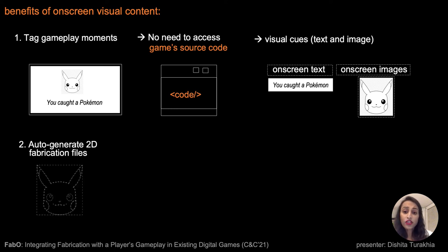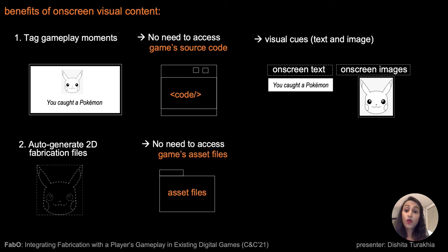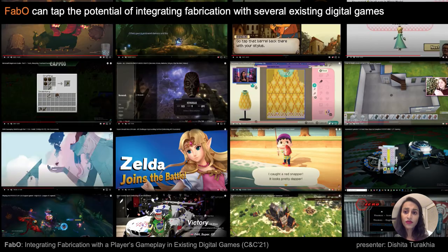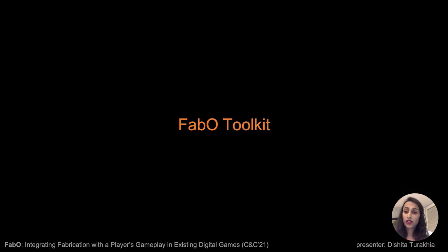Second, it auto-generates 2D fabrication files in real-time without needing access to the game's asset files. Instead, it uses object extraction on the game's digital objects. Thus, we can now tap the potential of fabricating objects from a variety of existing games played around the world.